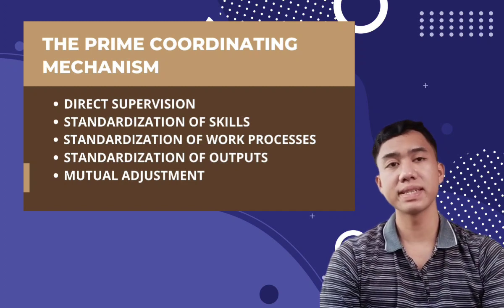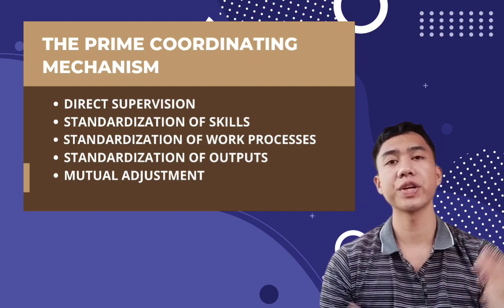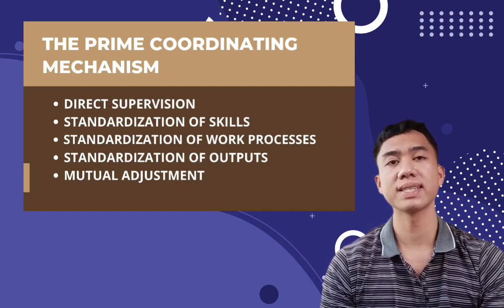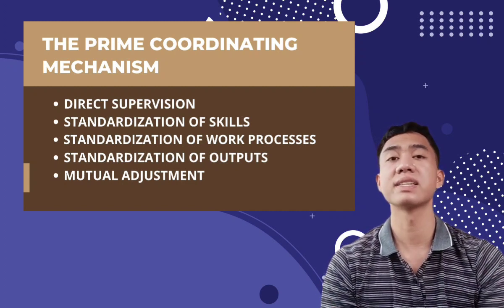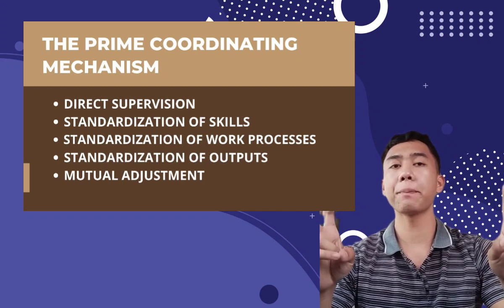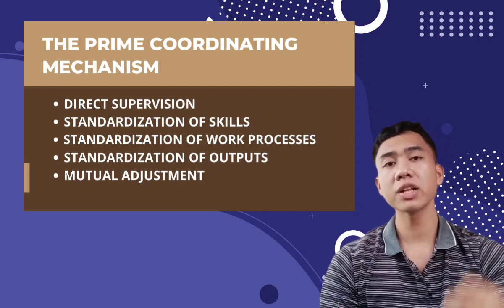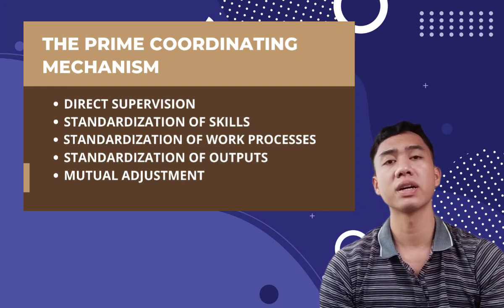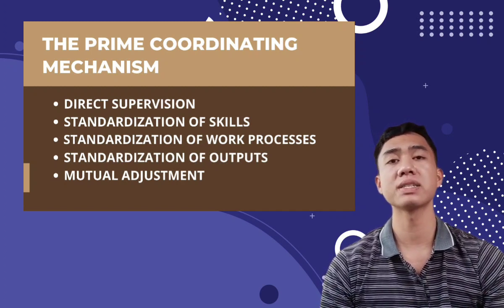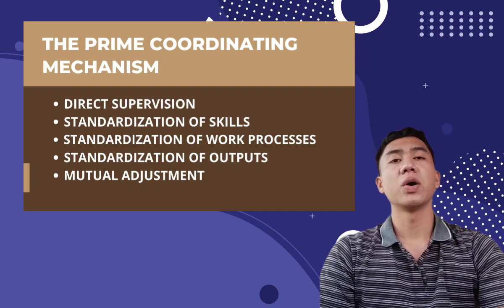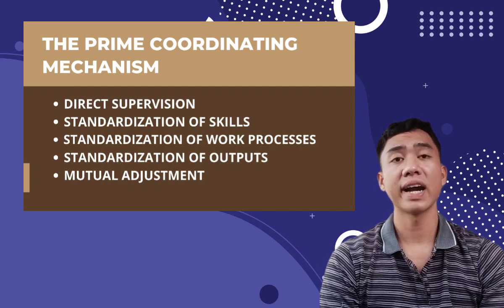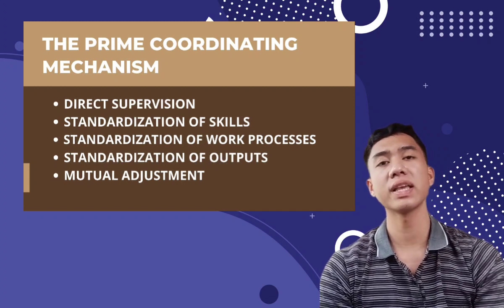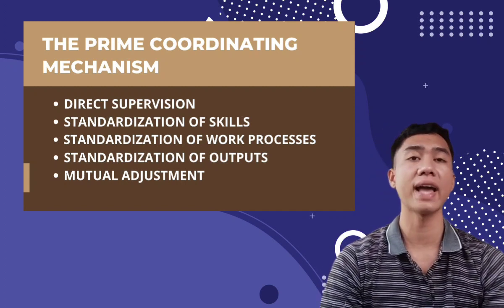Mutual adjustment exists when work is coordinated through informal communication. Mutual adjustment or coordination is the major thrust of Likert's 1967 linking pin concept. Informal communication lets individuals coordinate their work, and communication between peers is the crucial activity which makes this possible. As a result of a high level of cooperation, it is used equally and often in both very small and simple organizations.